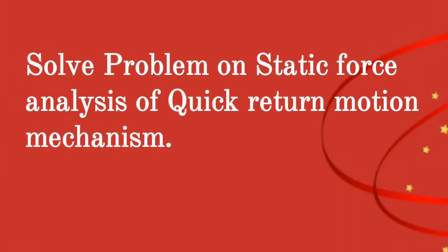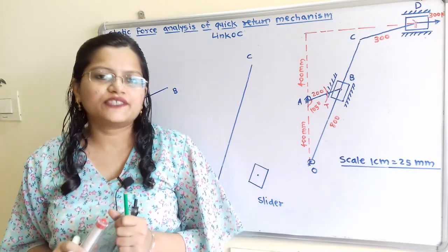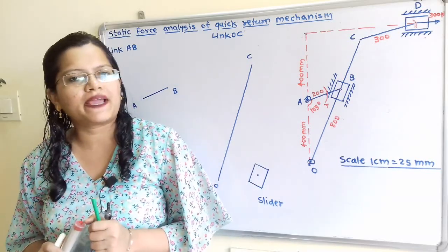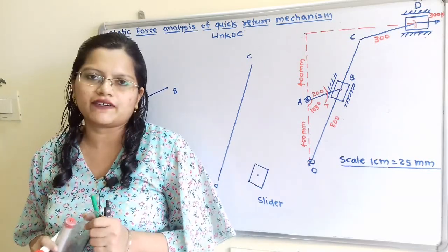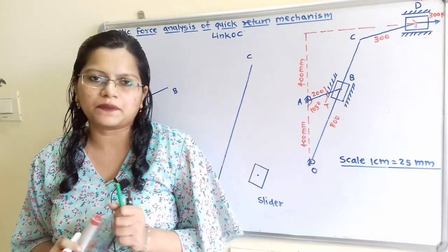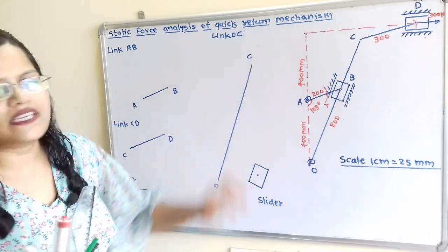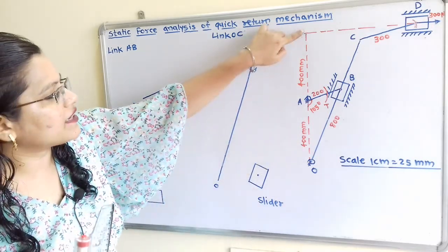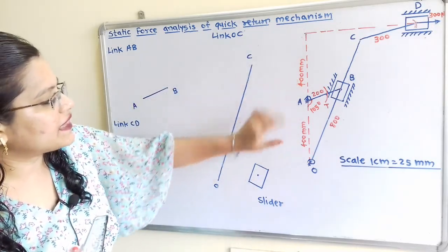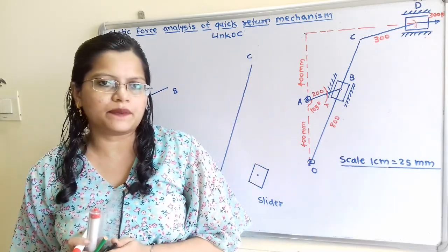We will solve one problem on static force analysis of a quick return motion mechanism. The configuration for the mechanism is mentioned in the question. First we have to draw the construction line. This vertical line is given with length 400 plus 400, that is equal to 800 mm.